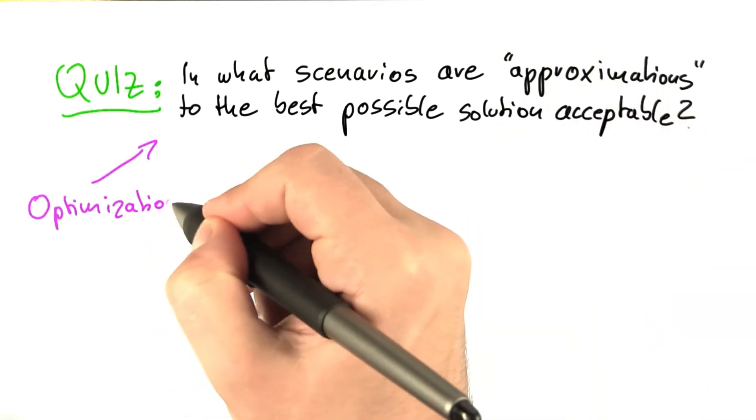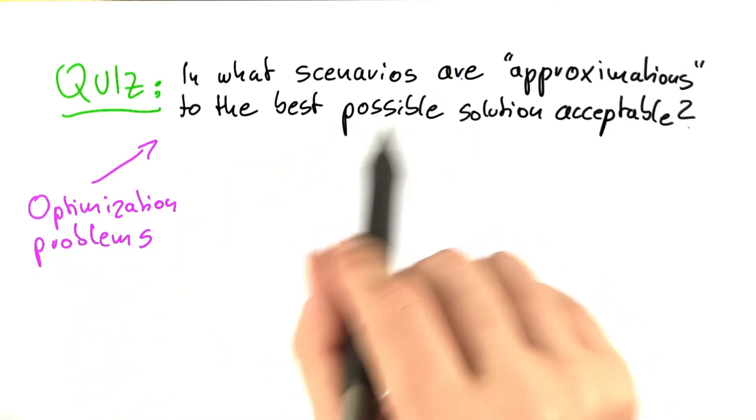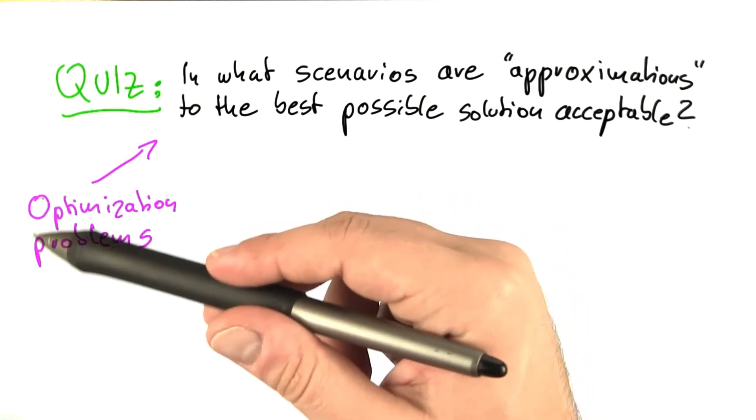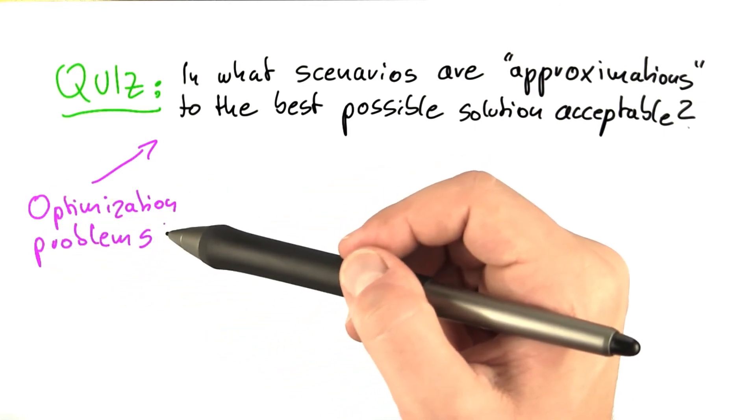And of course, just to be precise, in this unit we're going to be dealing with optimization problems. You can also talk about approximations to decision problems, but that's a bit of a different scenario, and actually we'll get into that when we talk about randomization, but that's not part of this unit here.